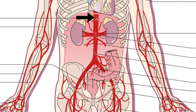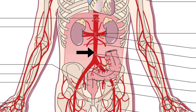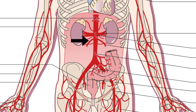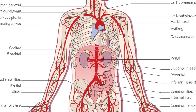From its anterior surface it bears three visceral arteries: the celiac trunk, the superior mesenteric artery, and the inferior mesenteric artery. Laterally it gives off three paired arteries: the adrenal, the renal, and the gonadal arteries.